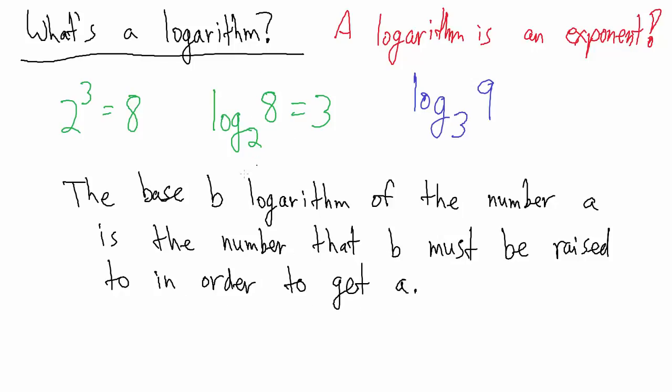Because the base 2 logarithm of the number 8 is the number that 2 must be raised to in order to get 8. So with this example here, B is 2 and A is 8. The base 2 logarithm of the number 8 is the number that 2 must be raised to in order to get 8. What must 2 be raised to to get 8? 2 must be raised to 3.